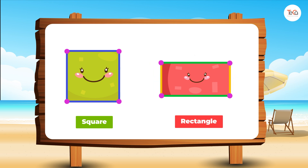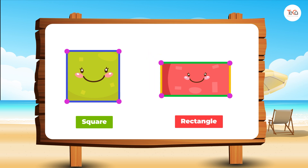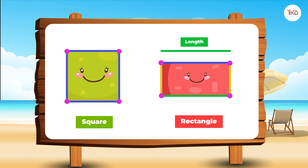However, these are adjacent sides — they are not equal. This side is longer, so it's called the length. This side is shorter, so it's called the width.